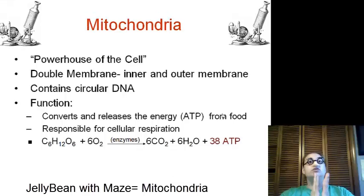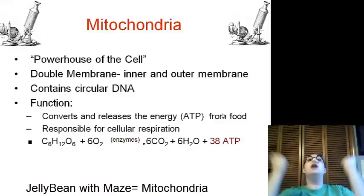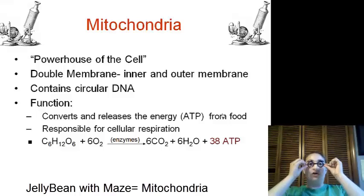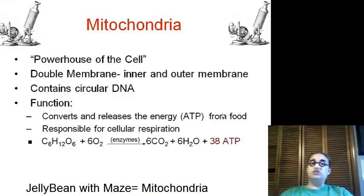Then, we have the mitochondria that are in both plants and animals. Both. They are the powerhouse, the mighty, mighty mitochondria. Double membrane. We have an inner membrane, we have an outer membrane. And it is a jelly bean that has a maze inside of it. It contains its own DNA, its circular DNA. And it functions to convert and release energy, as ATP, from food, through cellular respiration. Please, take down that chemical reaction. You will need to know it, and we will go through it.